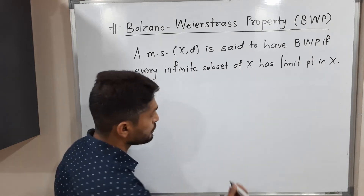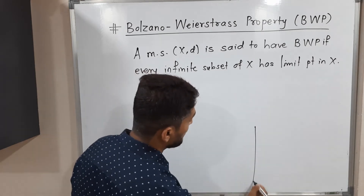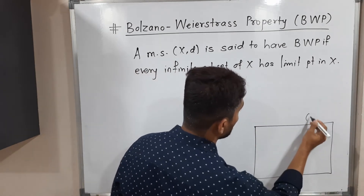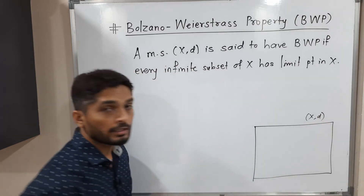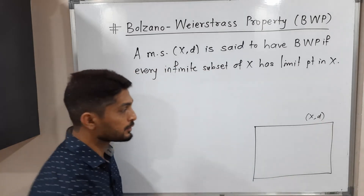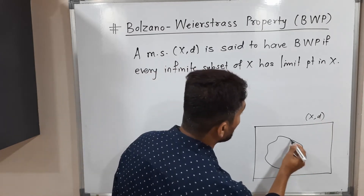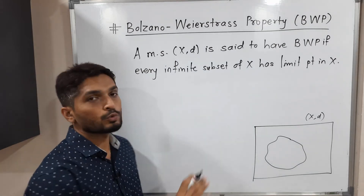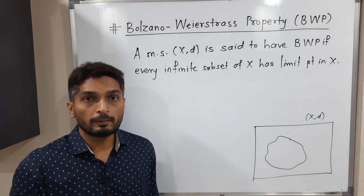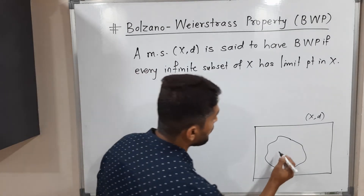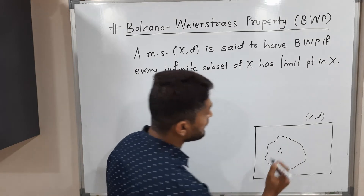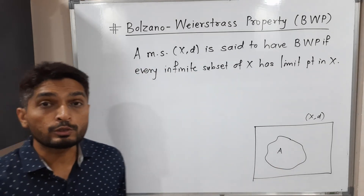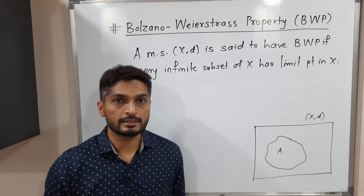So let me draw a diagram so the picture will be clear. Suppose this is a metric space (X, d), and we have an infinite subset. The set should be infinite — this property holds only for infinite sets. So if you have any infinite set A having infinite number of elements, it should have a limit point in X.